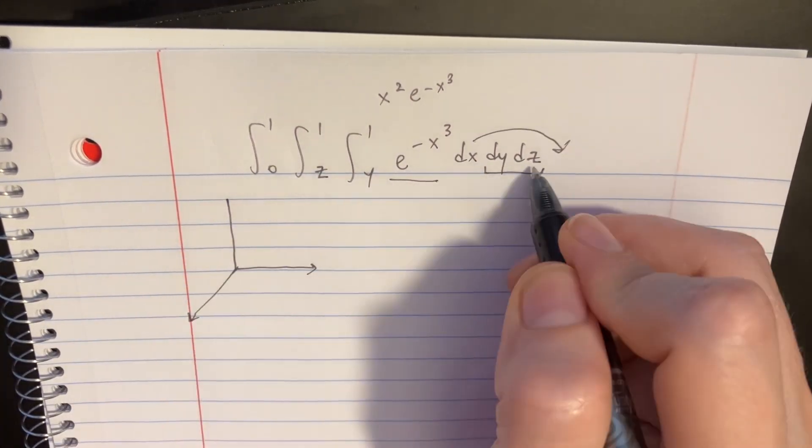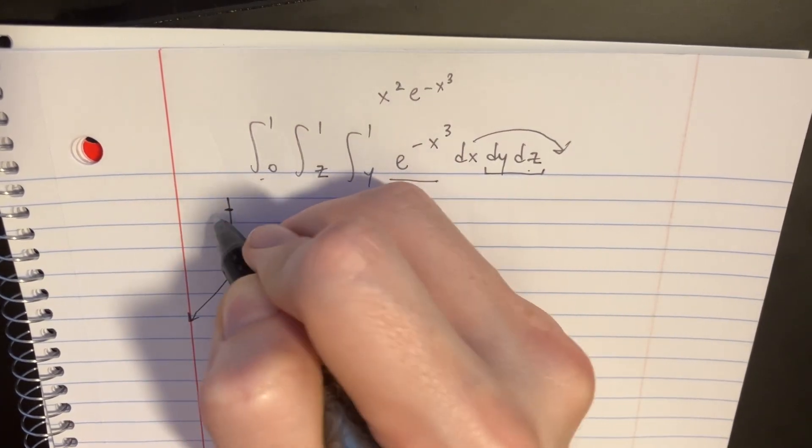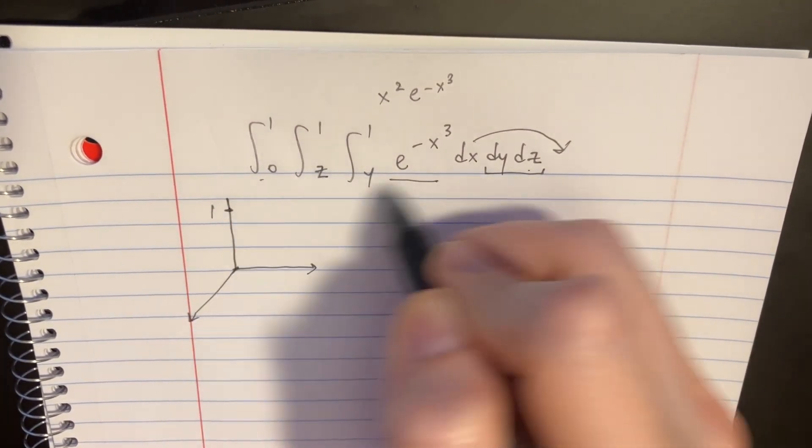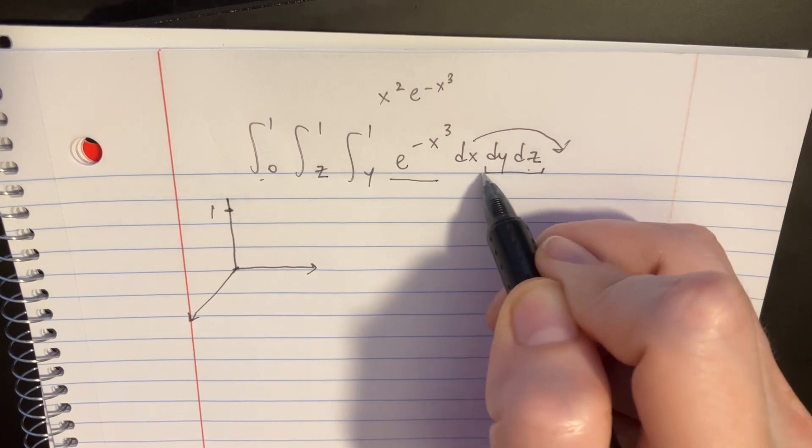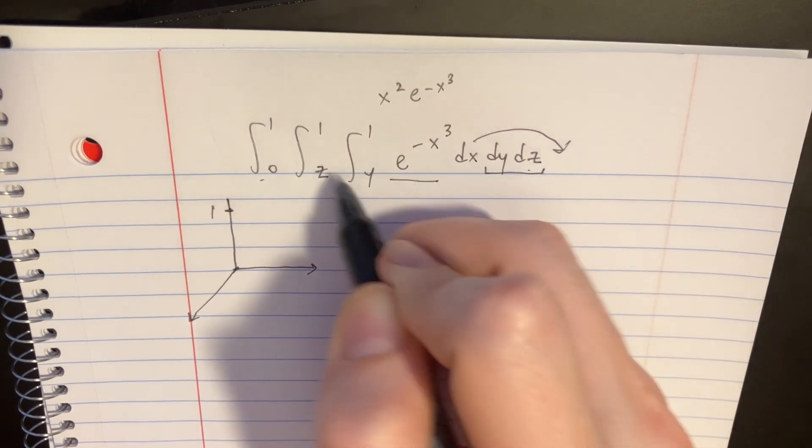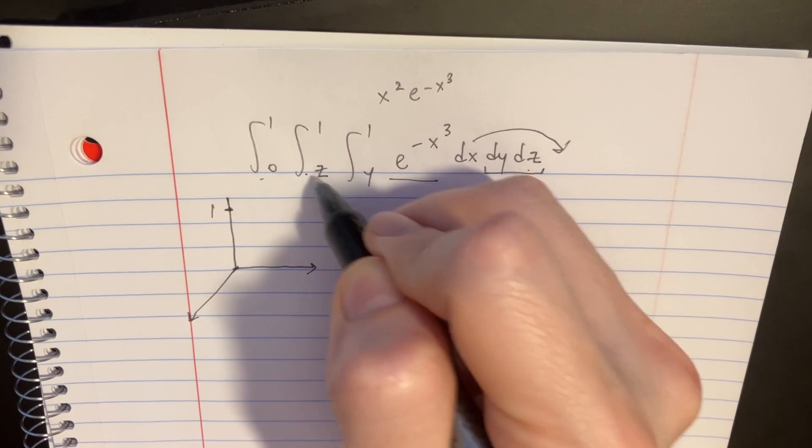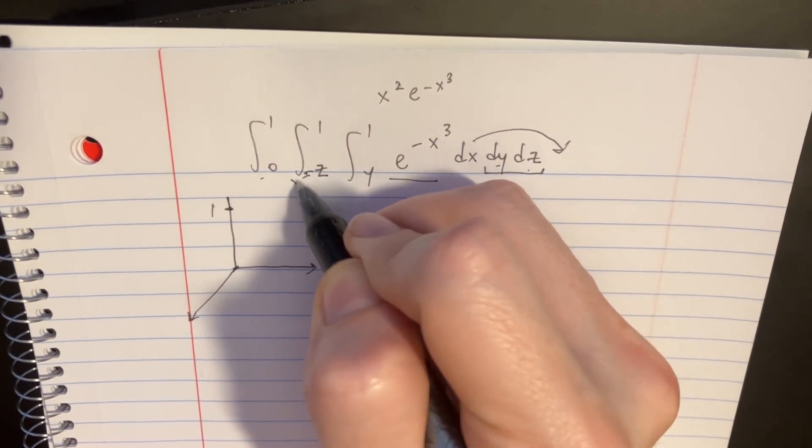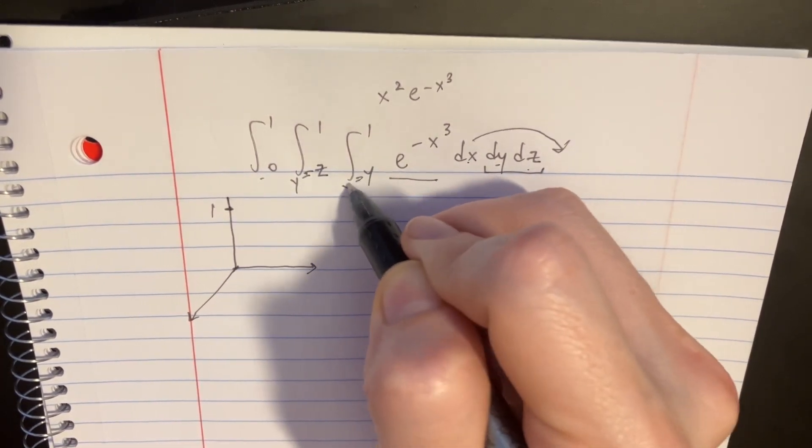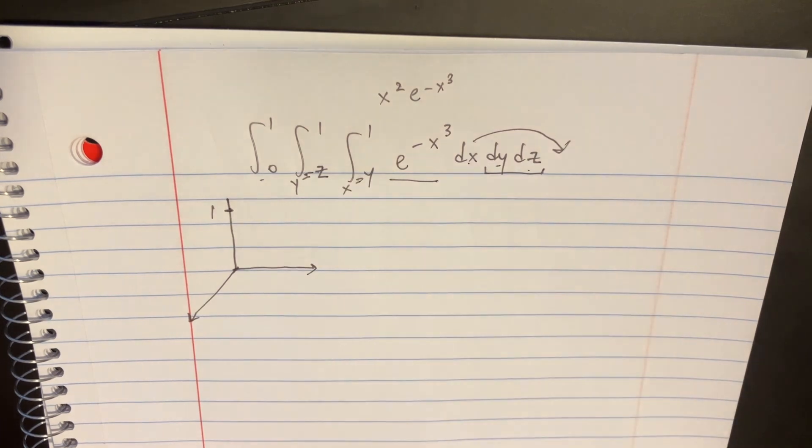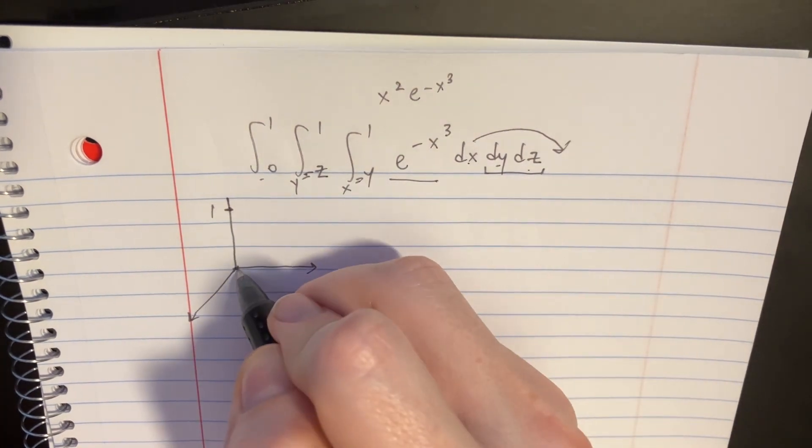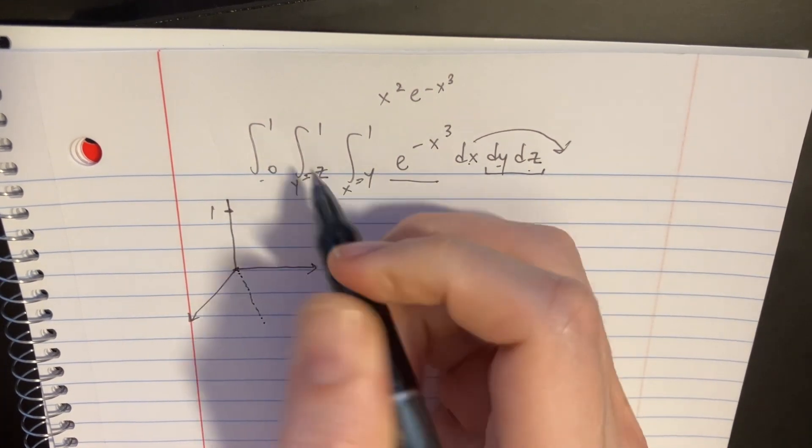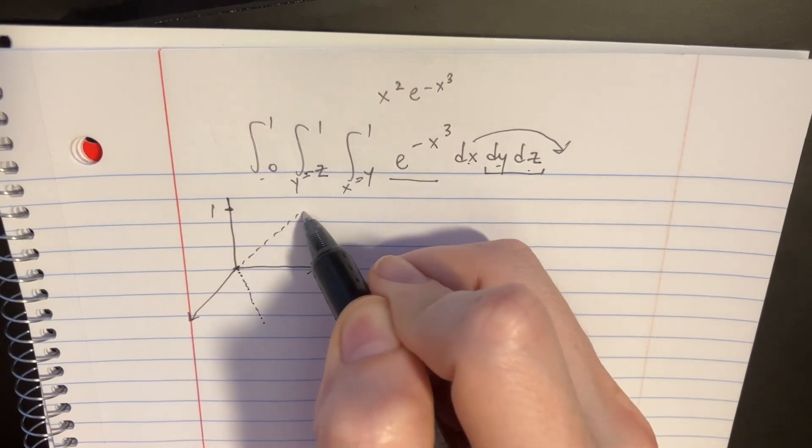We're going to want to say dz goes from zero to one, and then we've got the dy's and the dx's over here. This one correlates to y, and this one correlates to x. So it gives us two lines, y equals z, y equals x. The y equals x line is more like this. The y equals z line is more like this.